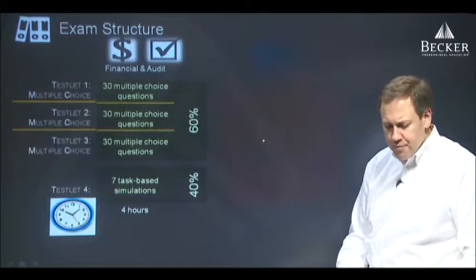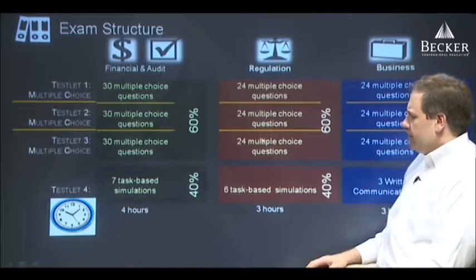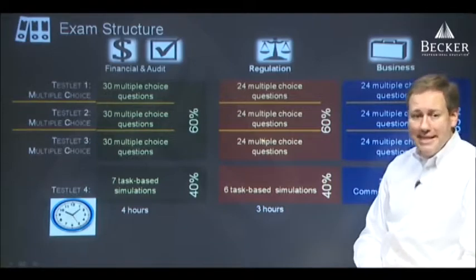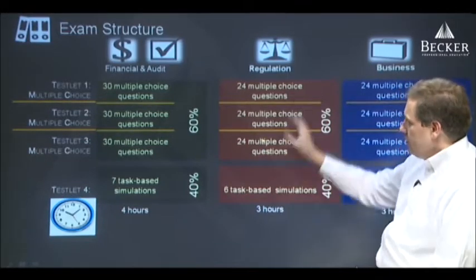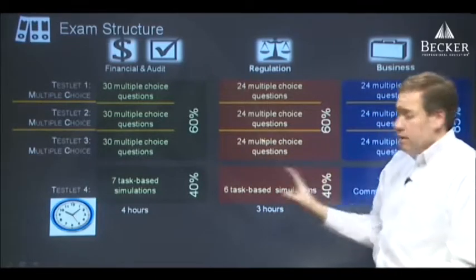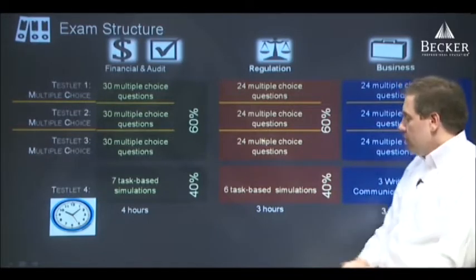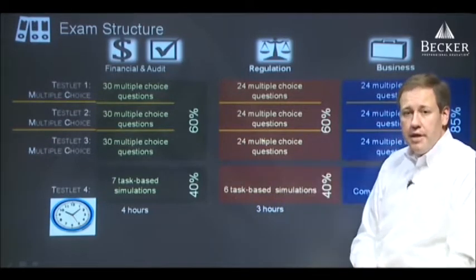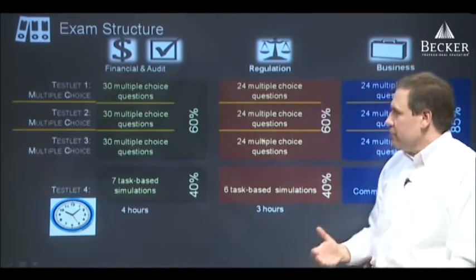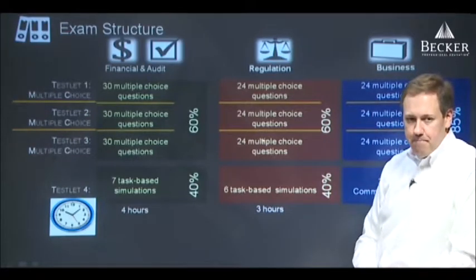Regulation follows a similar structure, as does business, but here are the differences. Number one, regulation and business are both three hours in length instead of four. So if we look at regulation, it's the same format, only shorter — instead of 30 questions per testlet, we only have 24, for 72 in total. Instead of seven simulation tasks, there are only six. But other than that, it's structurally the same. Again, the point value is split 60-40.